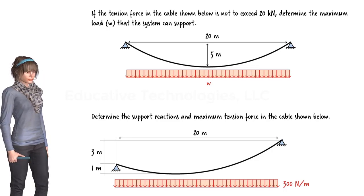Then the tension force in the cable can be expressed mathematically using the Pythagorean theorem. This equation tells us that the tension force attains its maximum value when x is maximized. Given the geometry of the bridge, we know that x cannot exceed 12.5 m. Therefore, the tension in the cable reaches its maximum value at x equals 12.5 — that is, the tension is maximized at the supports. The magnitude of this maximum force is 5,700 newtons.